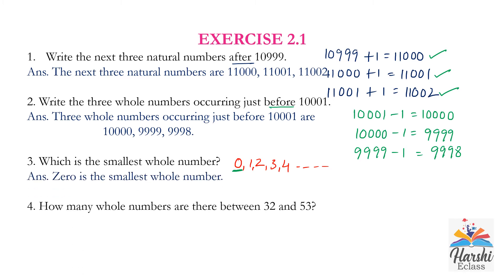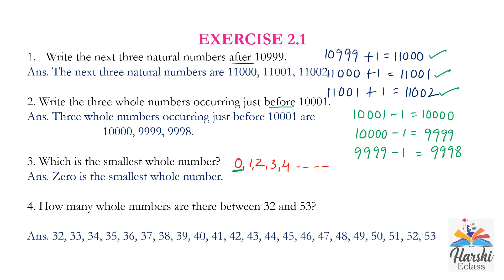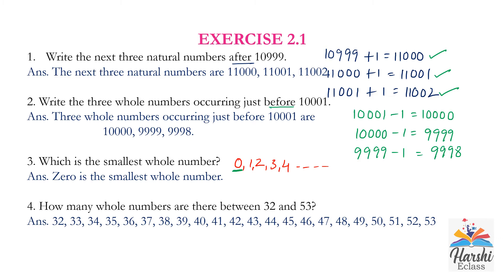Fourth question: how many numbers are there between 32 and 53? There are two methods — a lengthy method and a short method. I will explain both. First, write all numbers starting from 32 to 53. Then strike out 32 and 53, because the question asks for numbers between them. Then count the remaining numbers.